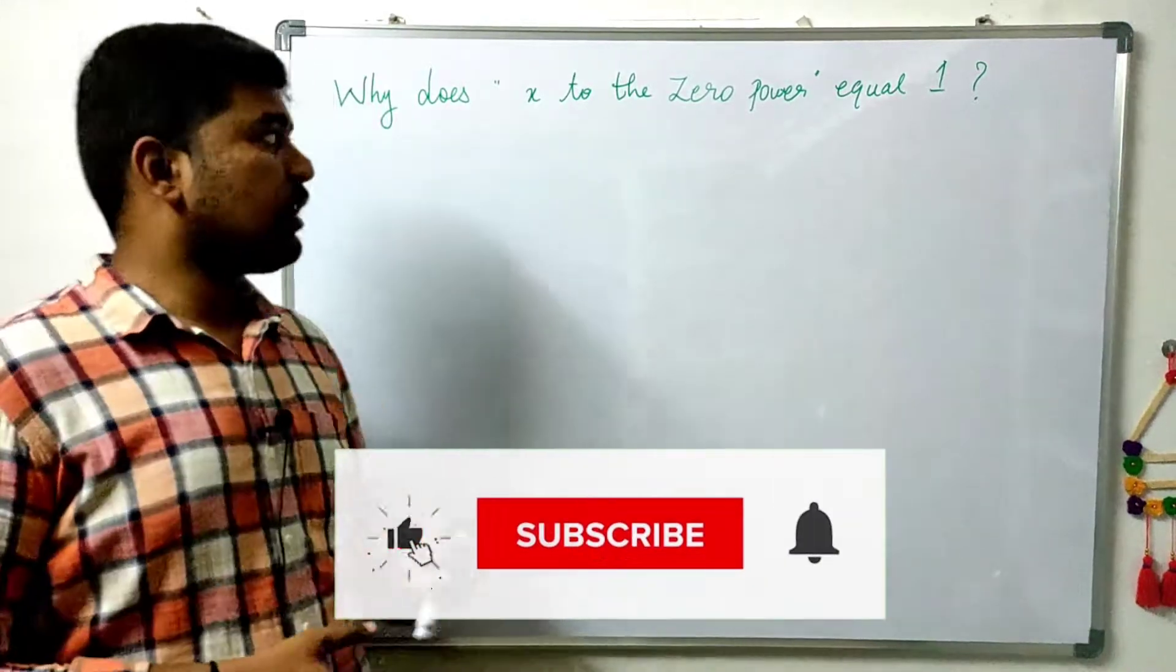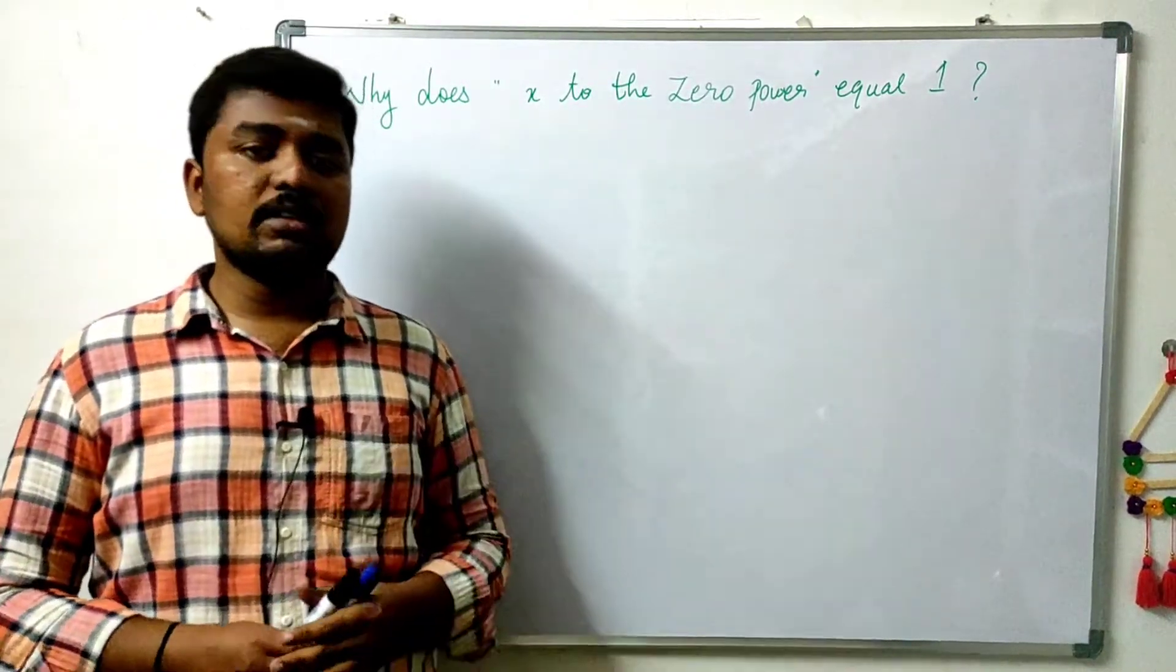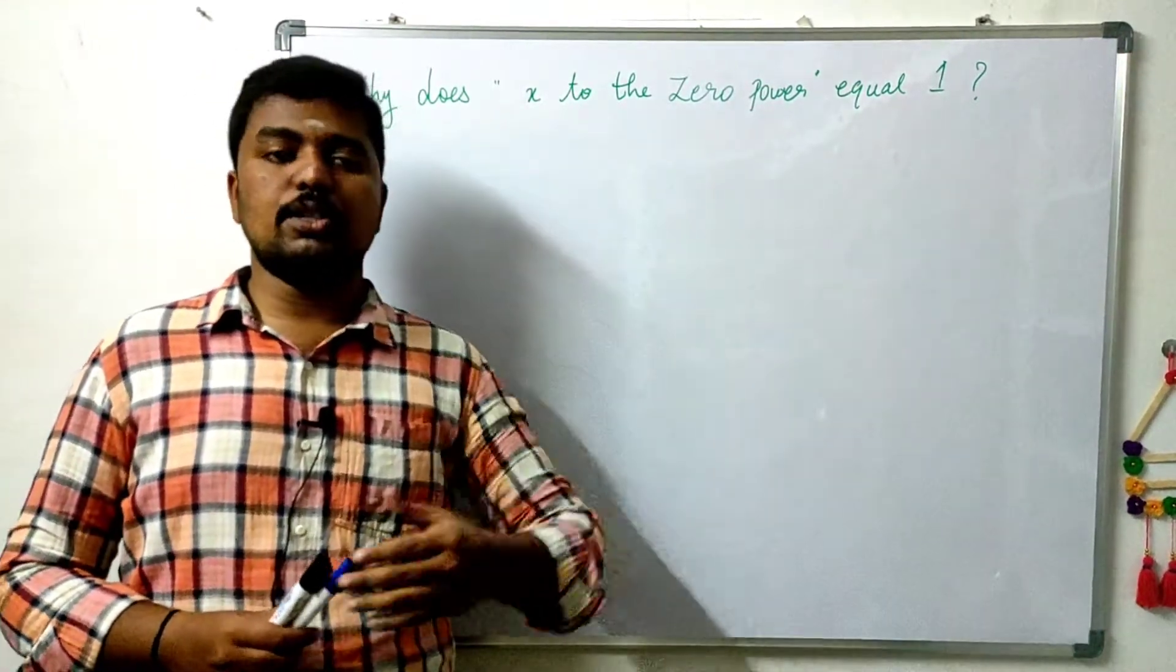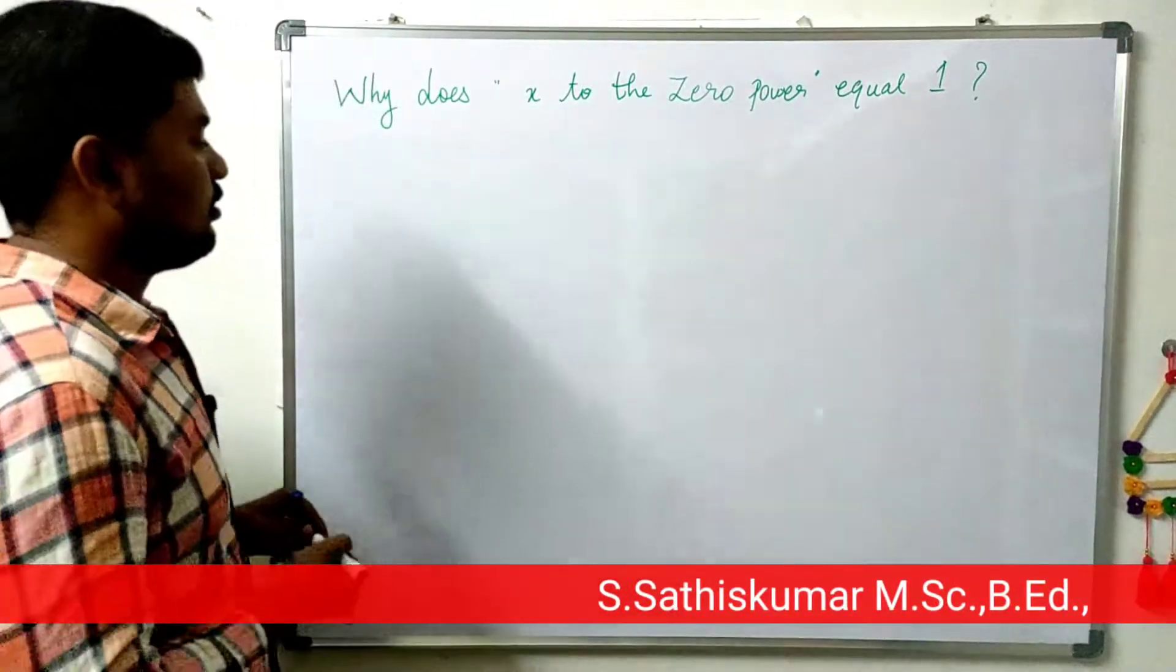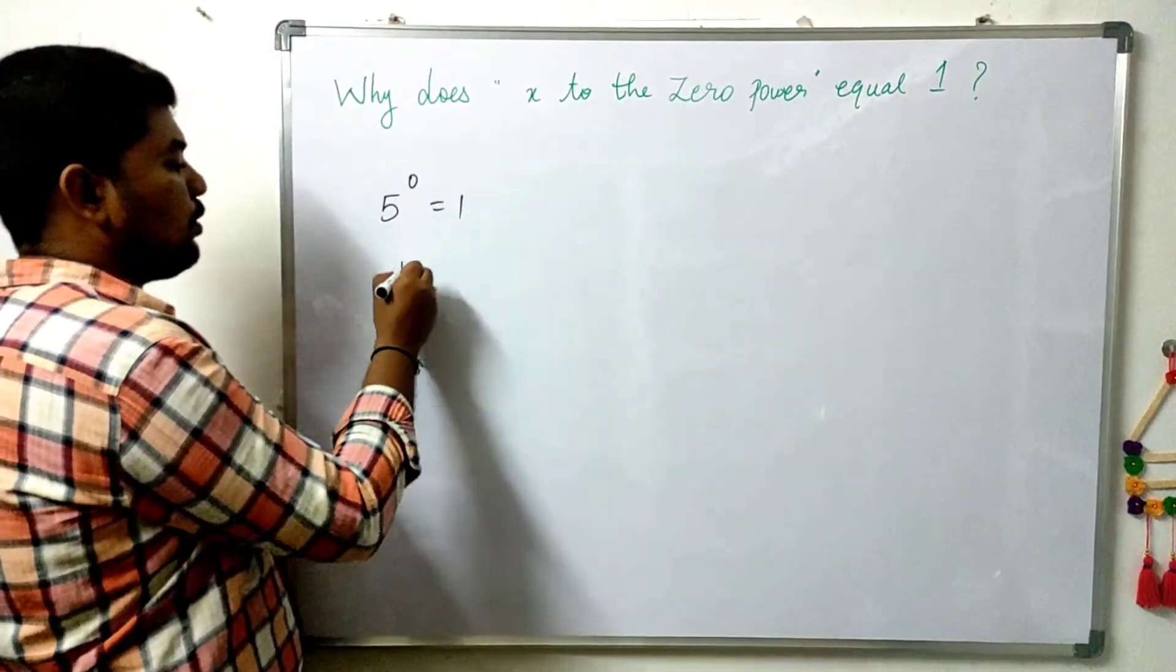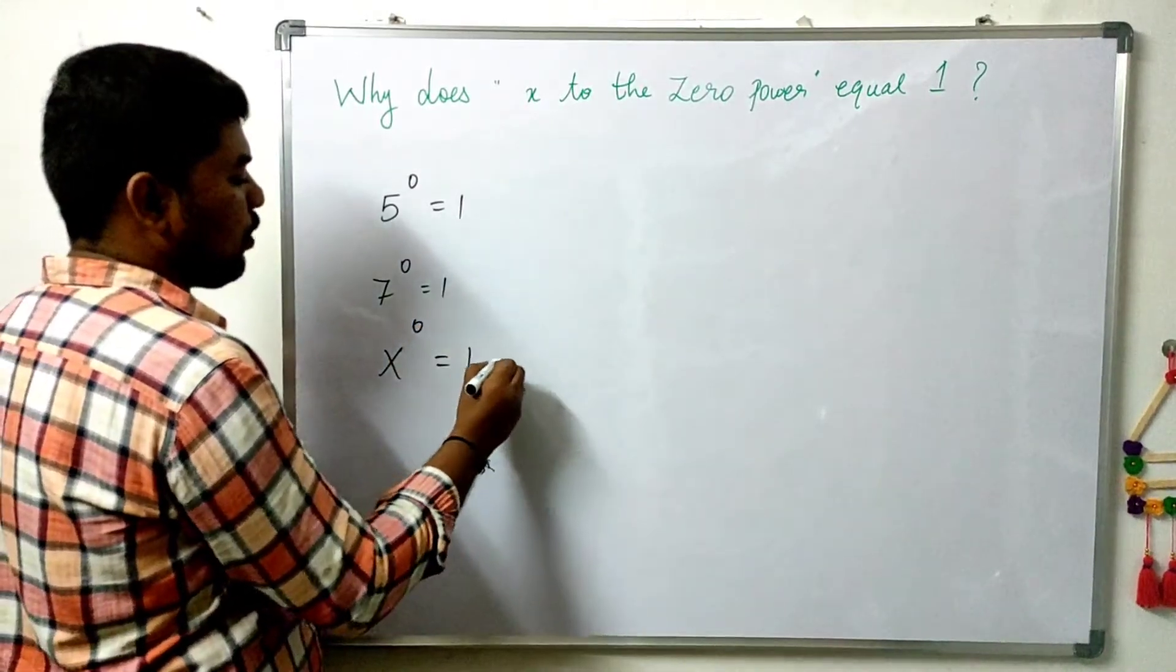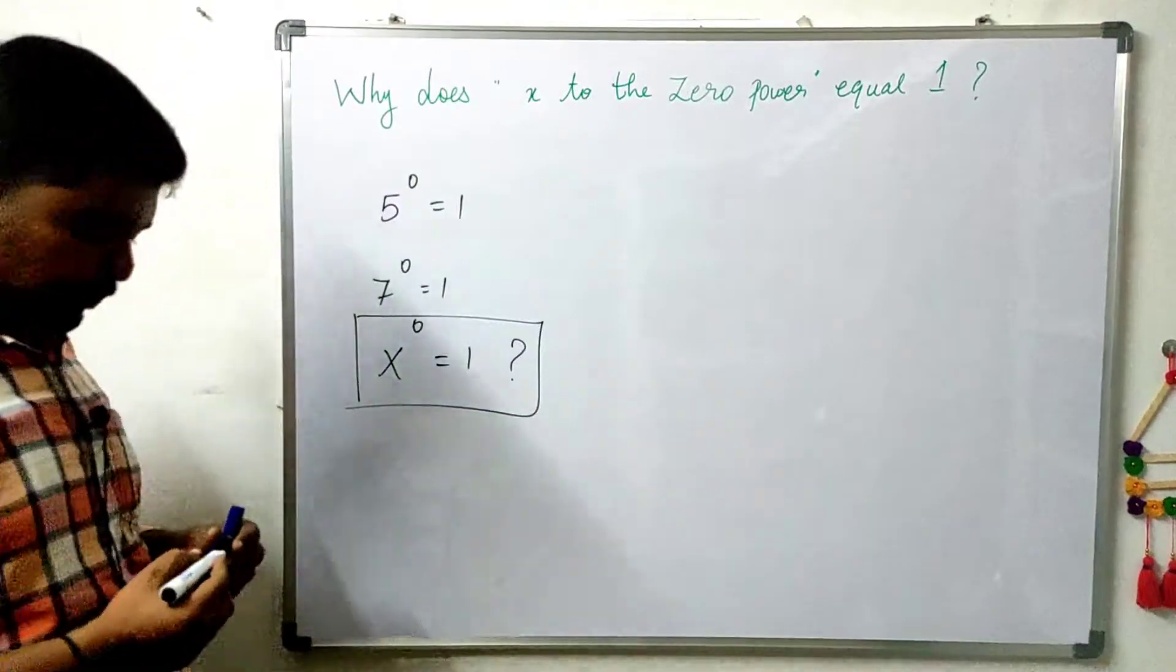Why does x to the 0 power equal 1? That means x power 0, or any base power 0. That means 5 power 0 is equal to 1, and 7 power 0 is equal to 1. We will discuss this.